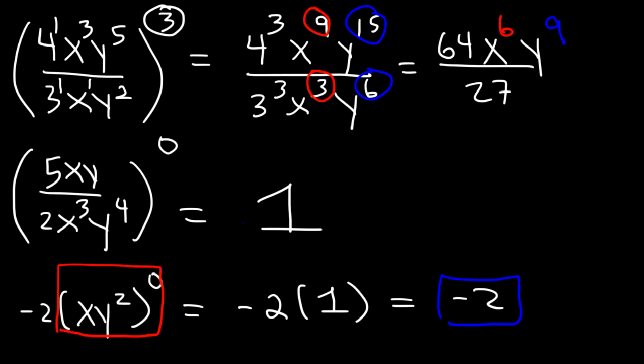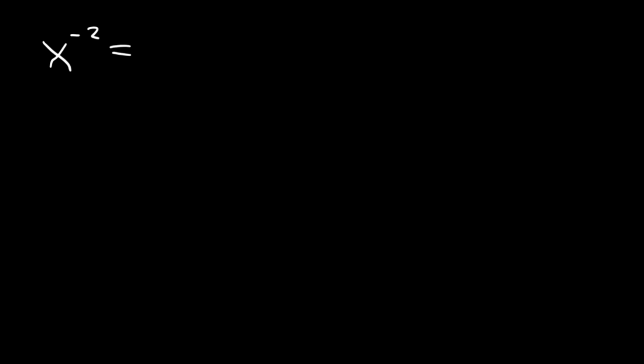So those are just a few examples of properties of exponents — make sure you understand this. Now let's talk about negative exponents. What is x to the negative 2? How would you simplify that, and how can you make the negative exponent positive?